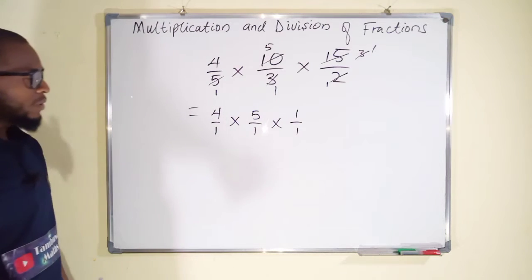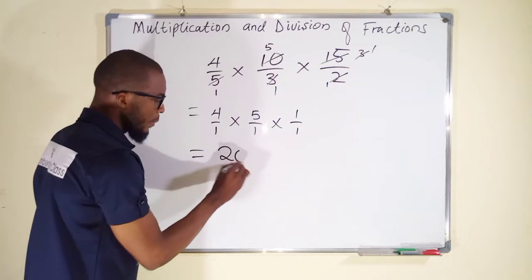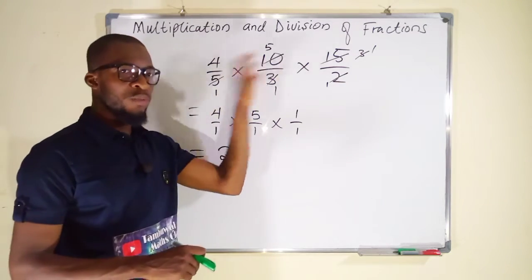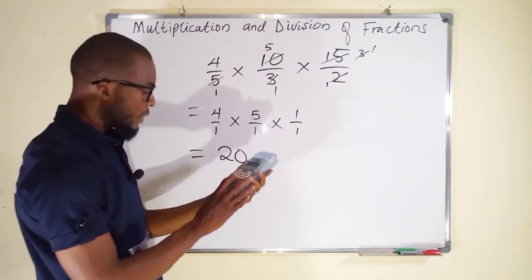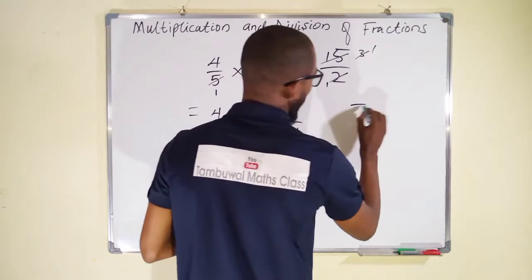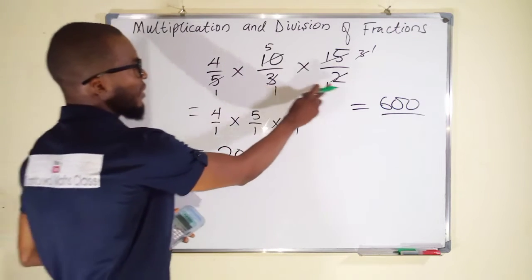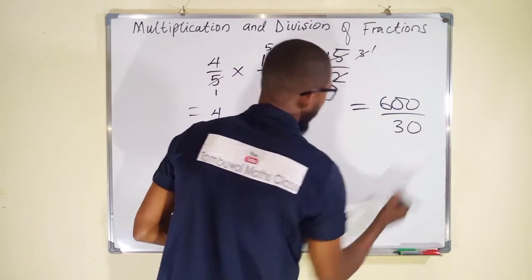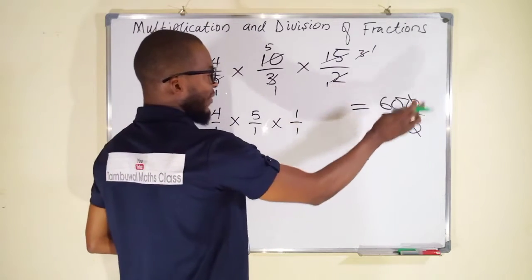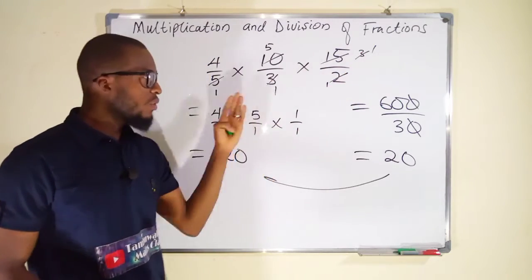So what we have is just 20: 4 times 5 is 20 times 1 is 20, divided by 1 times 1 times 1 which is 1, giving 20. We can verify with a calculator: 4 × 10 × 15 = 600 in the numerator, and 5 × 3 × 2 = 30 in the denominator. Since numbers ending in 0 allow cancellation, 600 divided by 30 is 20 — confirming our answer.